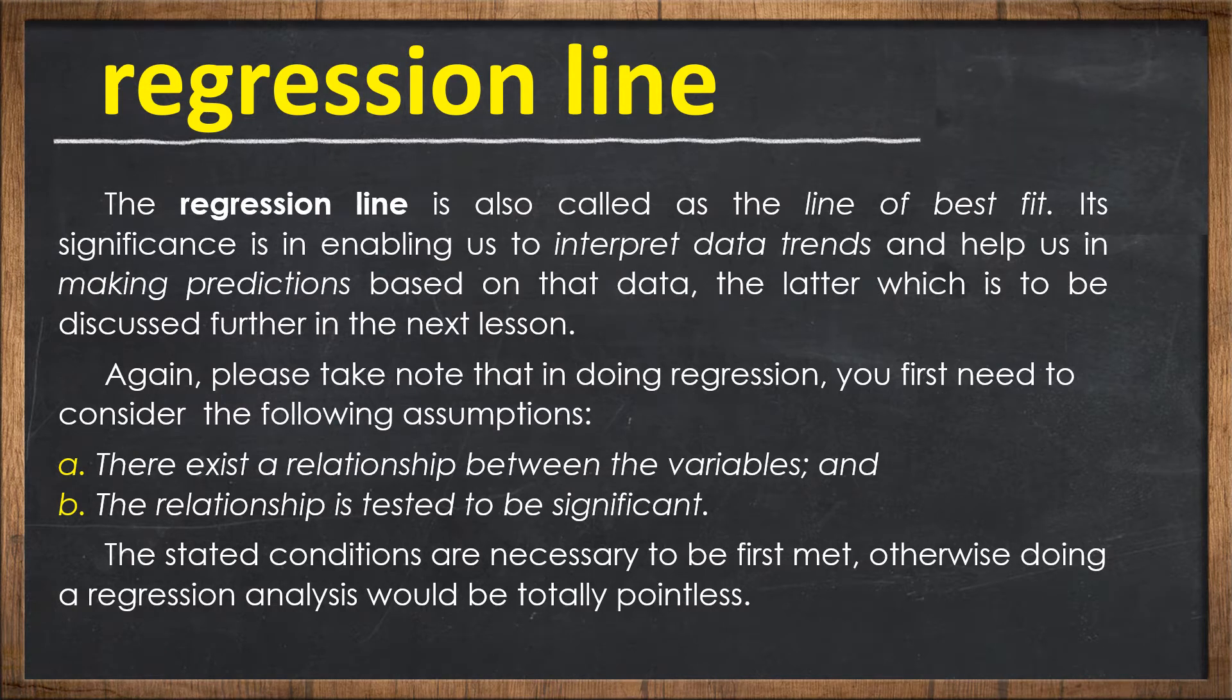The regression line is also called the line of best fit. Its significance is enabling us to interpret data trends and help us in making predictions based on that data. Please take note that in doing regression, you first need to consider the following assumptions: there exists a relationship between the variables and the relationship is tested to be significant. The stated conditions are necessary to be first met, otherwise doing a regression analysis would be totally pointless.